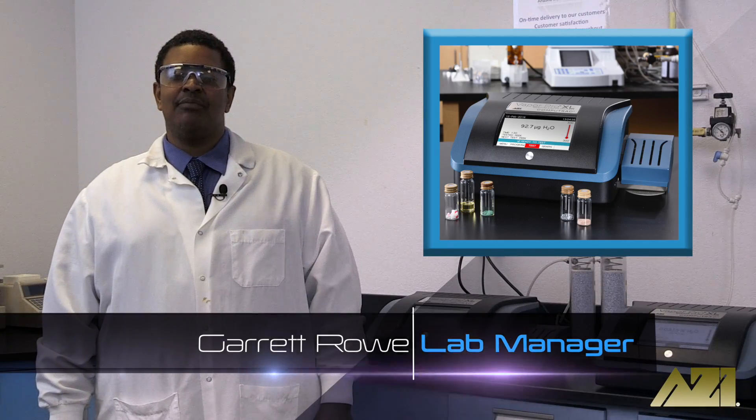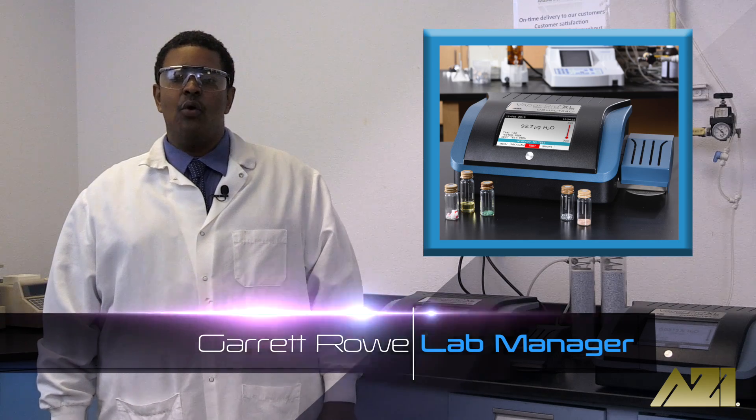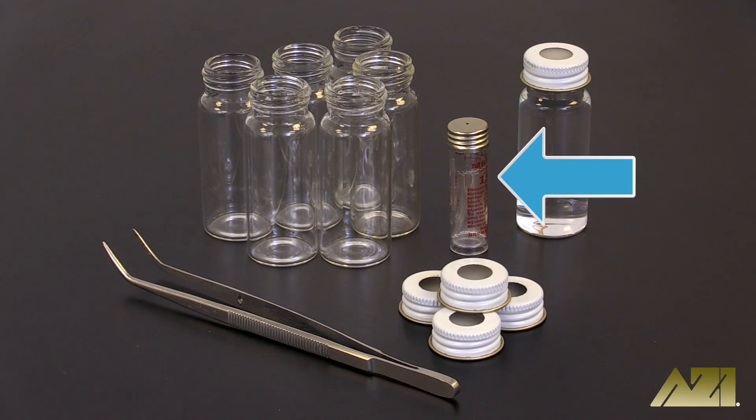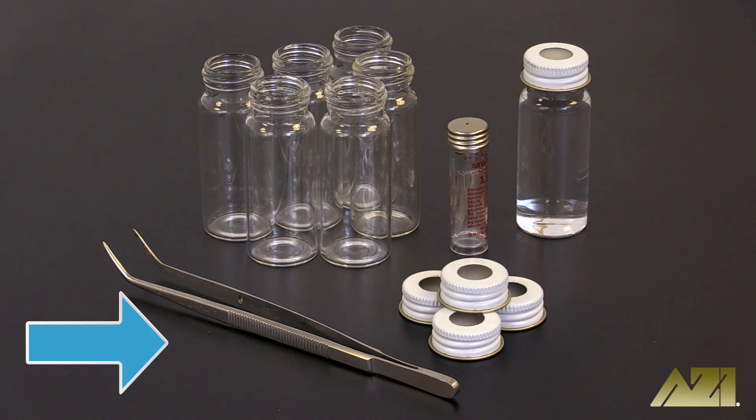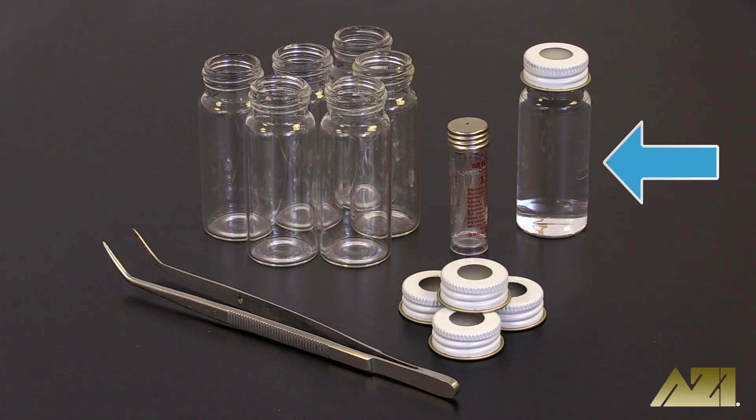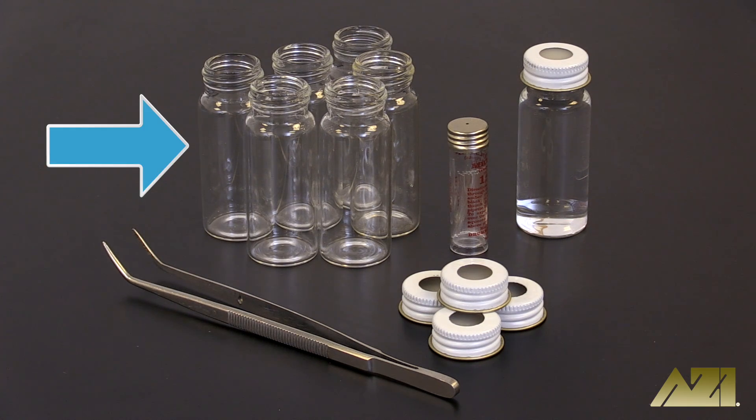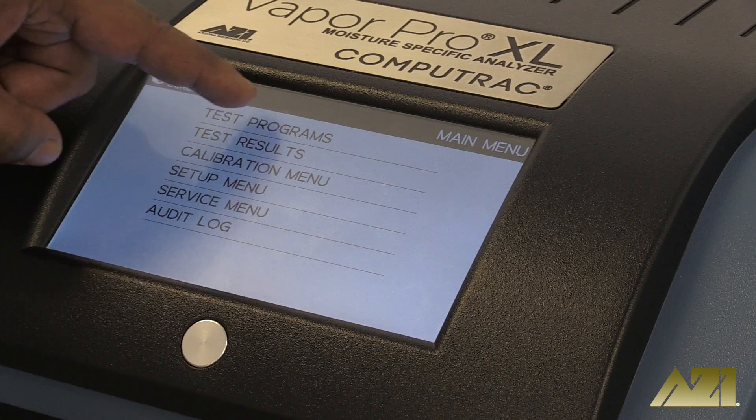To perform the system calibration on your new VPXL, you will need the following: one microliter microcaps, a pair of tweezers, a small supply of purified or deionized water, and sample bottles, caps, and septa. All of these items can be purchased through Arizona Instrument. See the description below for more details.